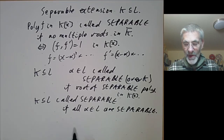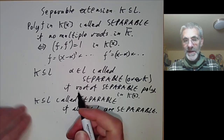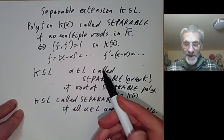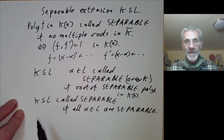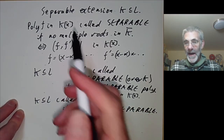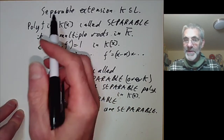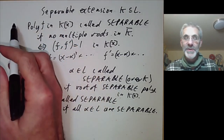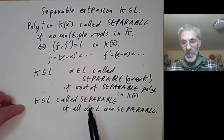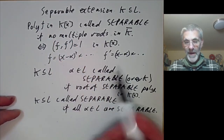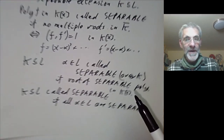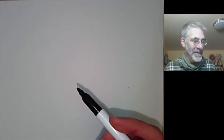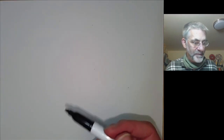Separability is a way of making sure that the polynomials you're interested in don't have multiple roots. In the previous lecture we discussed normal extensions, and in the next lecture we're going to discuss Galois extensions. Galois extensions turn out to be the same as extensions that are both separable and normal, so this is the motivation for separable extensions.